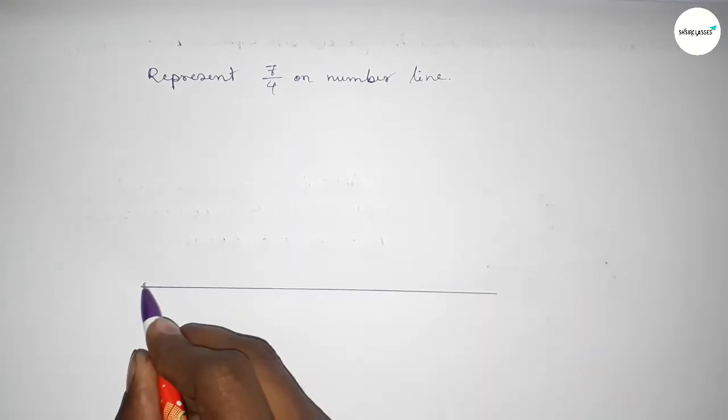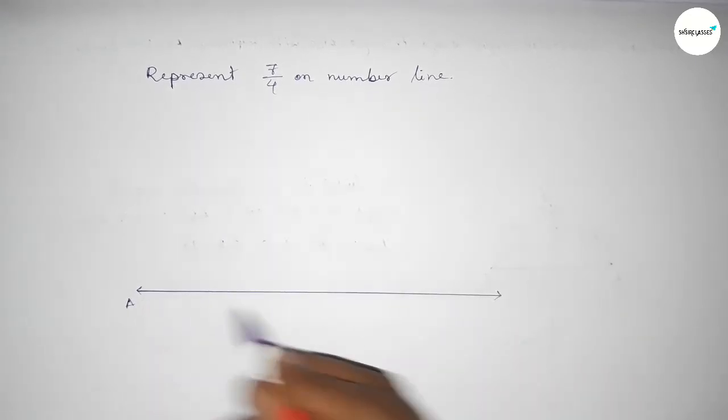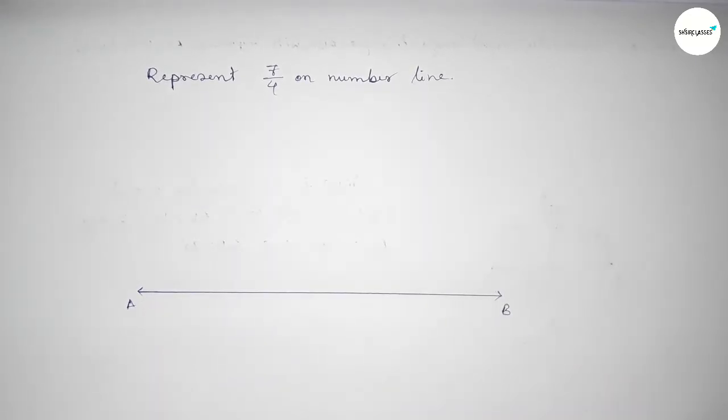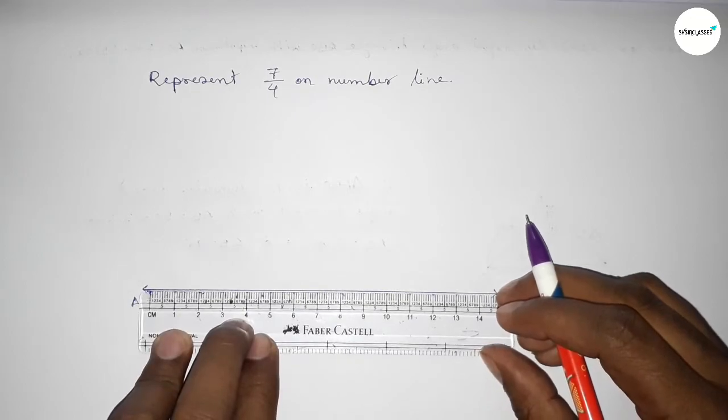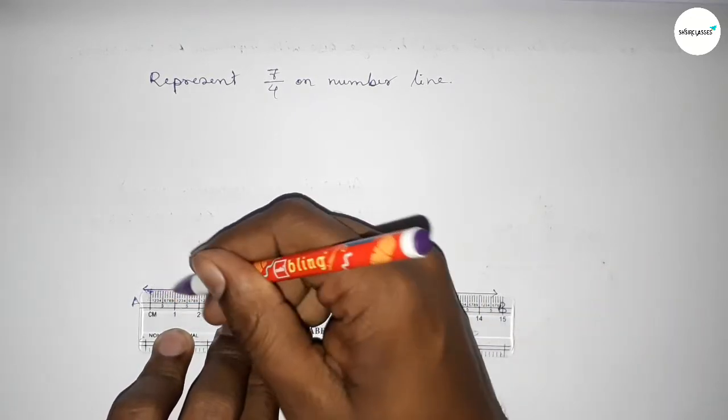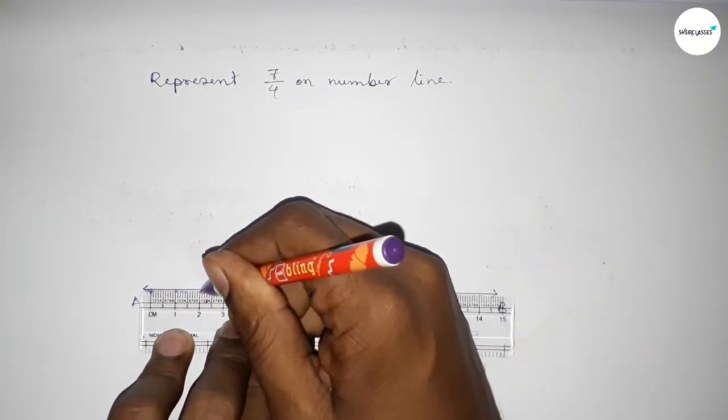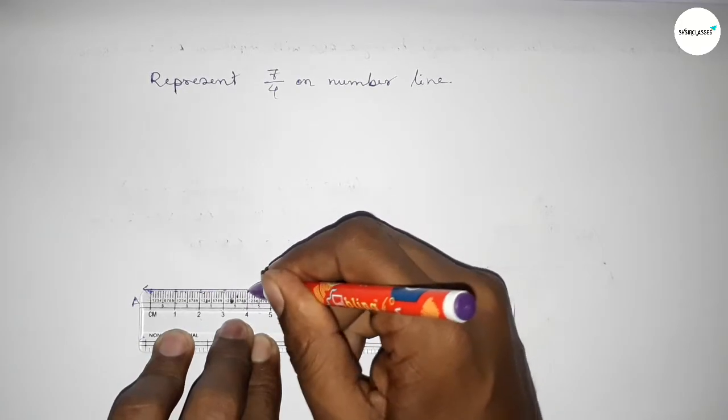Draw a line of any length and mark the ends with arrows. Take a point A and point B. Next, we have to mark the numbers on the line by using a scale.